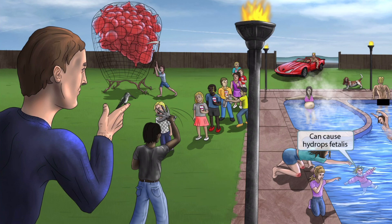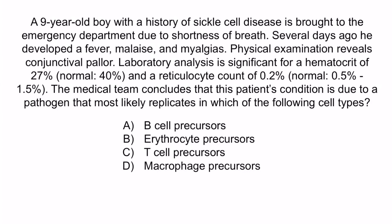Now that we've covered the image, let's review with a question. A nine-year-old boy with a history of sickle cell disease is brought to the emergency department due to shortness of breath. Several days ago, he developed a fever, malaise, and myalgias. Physical examination reveals conjunctival pallor. Laboratory analysis is significant for a hematocrit of 27% and a reticulocyte count of 0.2%. The medical team concludes that this patient's condition is due to a pathogen that most likely replicates in which of the following cell types? A, B cell precursors; B, erythrocyte precursors; C, T cell precursors; or D, macrophage precursors.